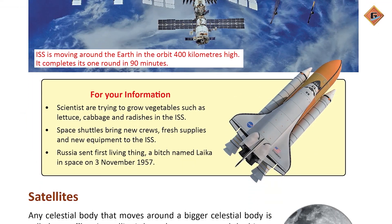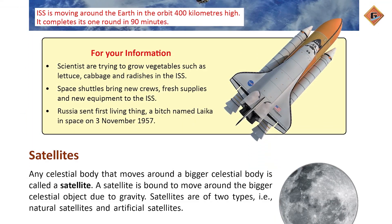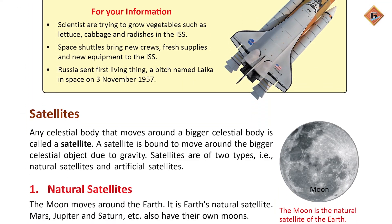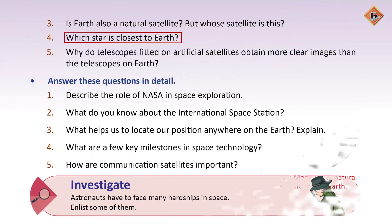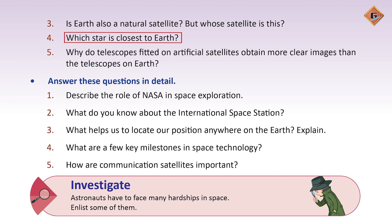Earth is the Sun's natural satellite. Which star is closest to the Earth? The Sun — you know that the Sun is also a star.